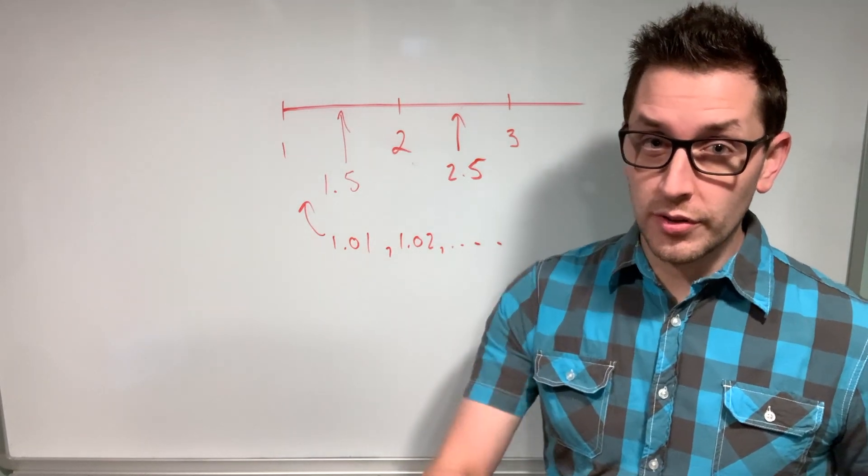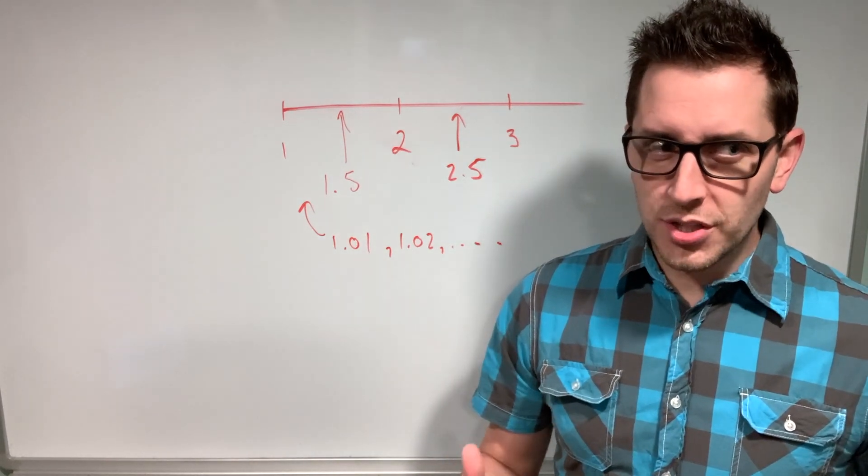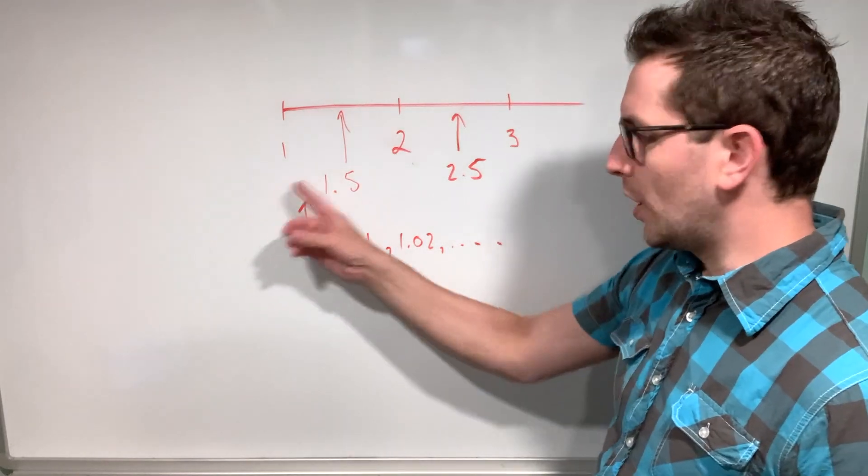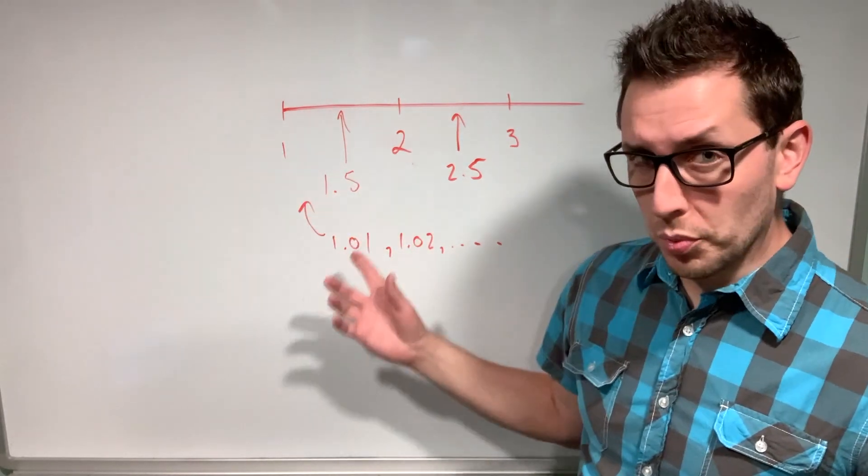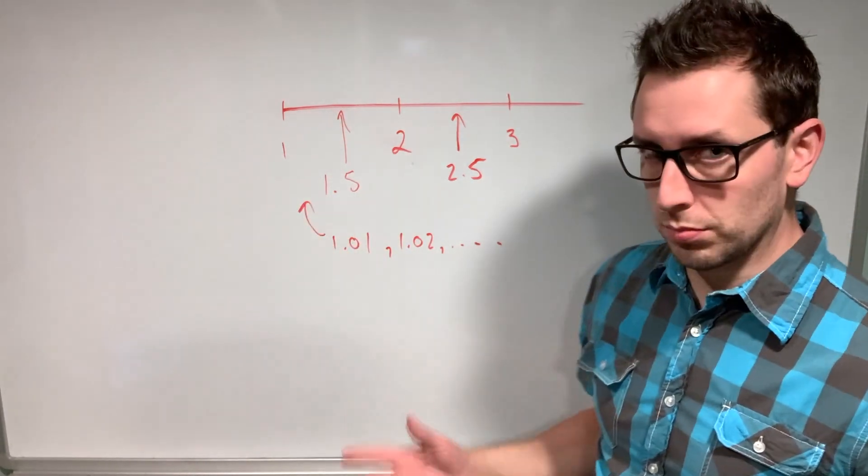Not only are there an infinite number of numbers between one and infinity, there are actually an infinite number of numbers between 1 and 2, or 1 and 1.5, or 1 and 1.01.